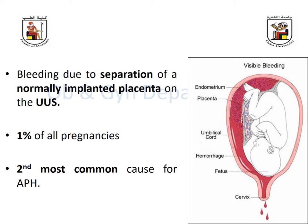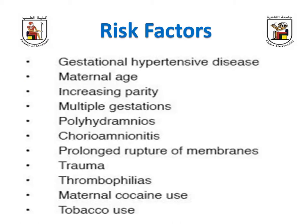Placental abruption occurs in about one percent of all pregnancies, making it more common than placenta previa, though placenta previa has been increasing due to several risk factors. It is considered the second most common cause of antepartum hemorrhage. The most important risk factor is maternal hypertension and hypertensive diseases, particularly severe preeclampsia. Whenever I recall a case of accidental hemorrhage, the first thing that comes to mind is a preeclamptic condition or hypertensive disorder.